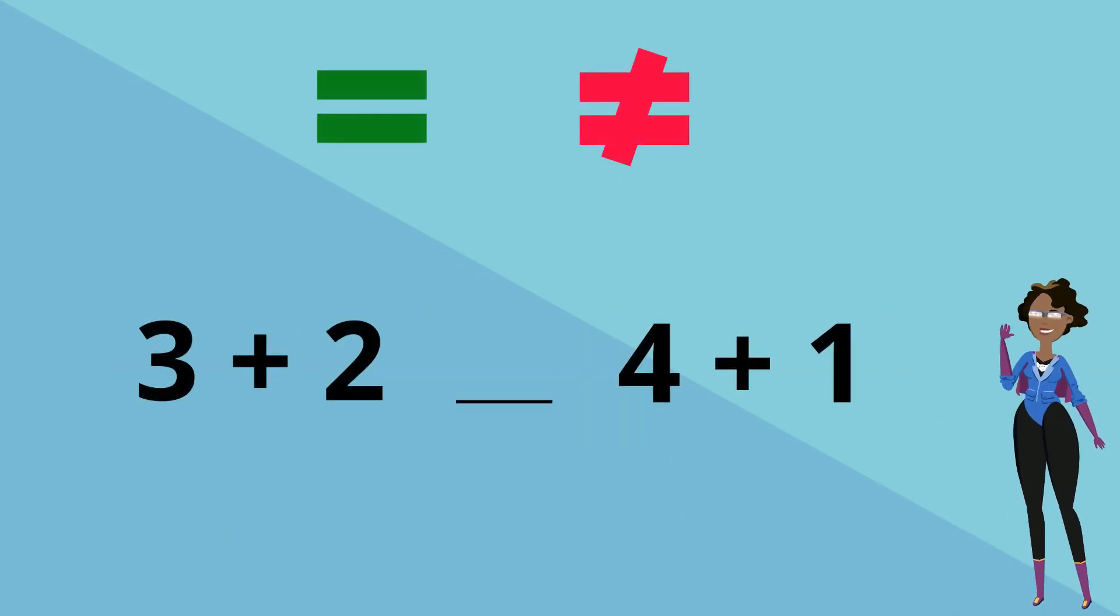Here's our next example. Are the two number sentences equal or unequal? Well 3 added to 2 gives us 5 and 4 added to 1 also gives us 5. So what sign should go in the middle of the number sentences? That's right, an equal sign.